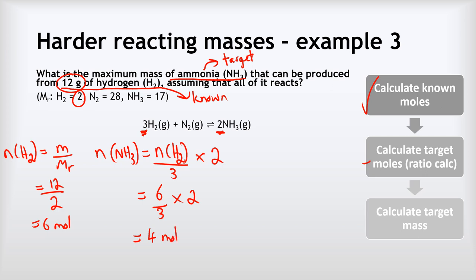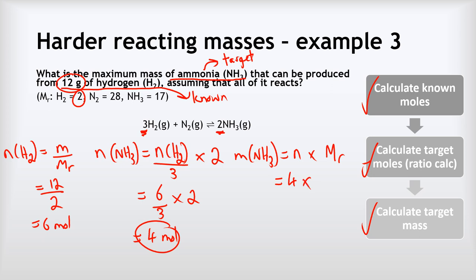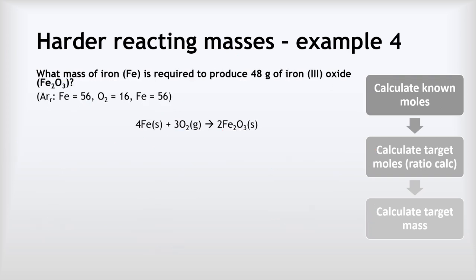So we've found the moles of our target. Mass of NH3 equals n multiplied by Mr: 4 multiplied by 17 gives us a final mass of 68 grams. Now let's step it up again with example four: what mass of iron Fe is required to produce 48 grams of iron(III) oxide Fe2O3?